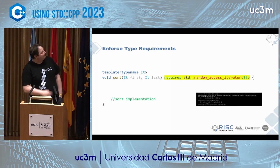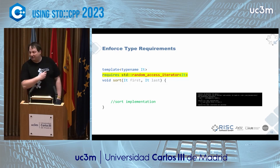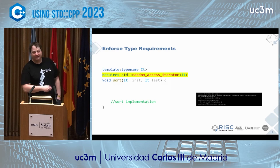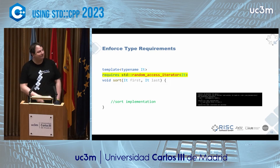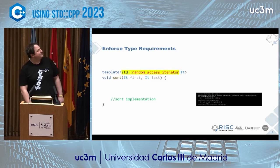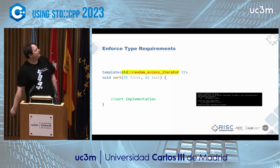We can actually move the constraint before the function declaration — that's nice, I see up front what the requirements are. But even that syntax is kind of busy and is only needed if you have multiple requirements for one template parameter. Because if all you need is one concept to be matched for your type, you can simplify this further. That's actually kind of nice — you can state up front, I need a random access iterator.